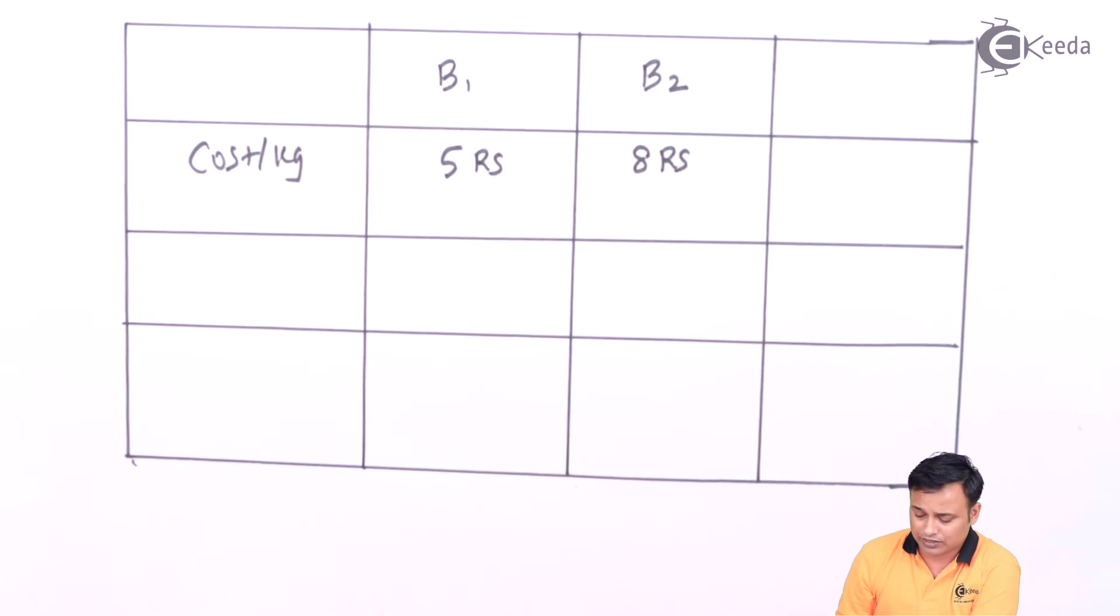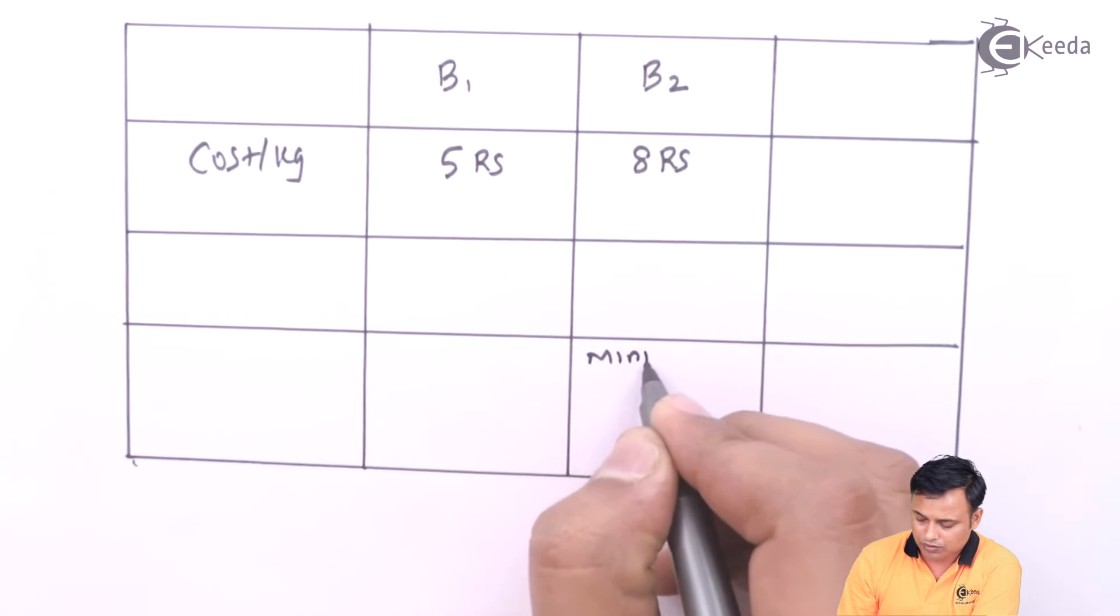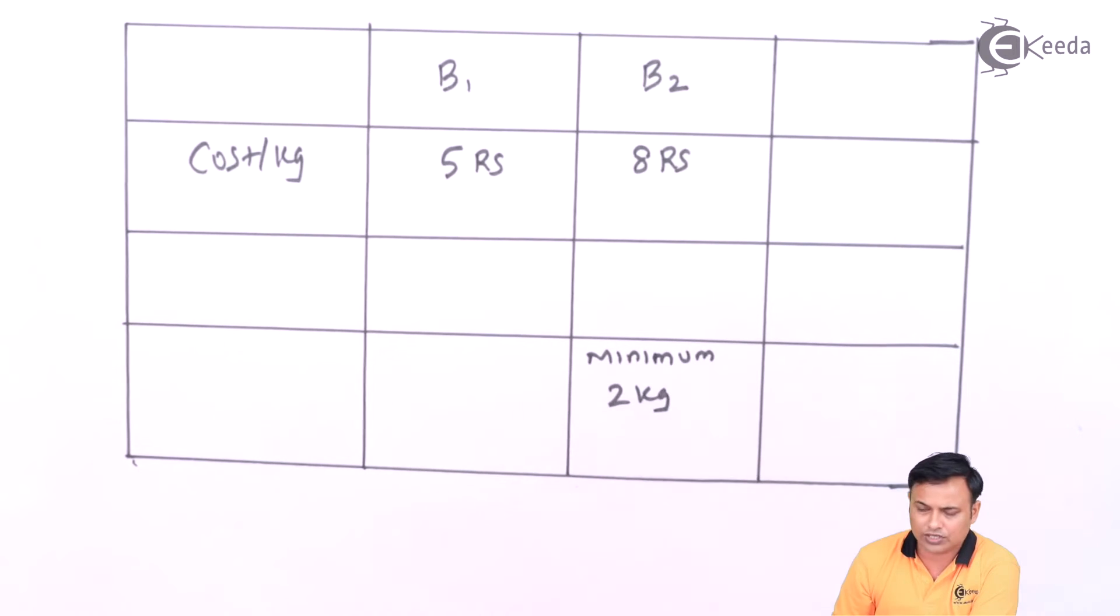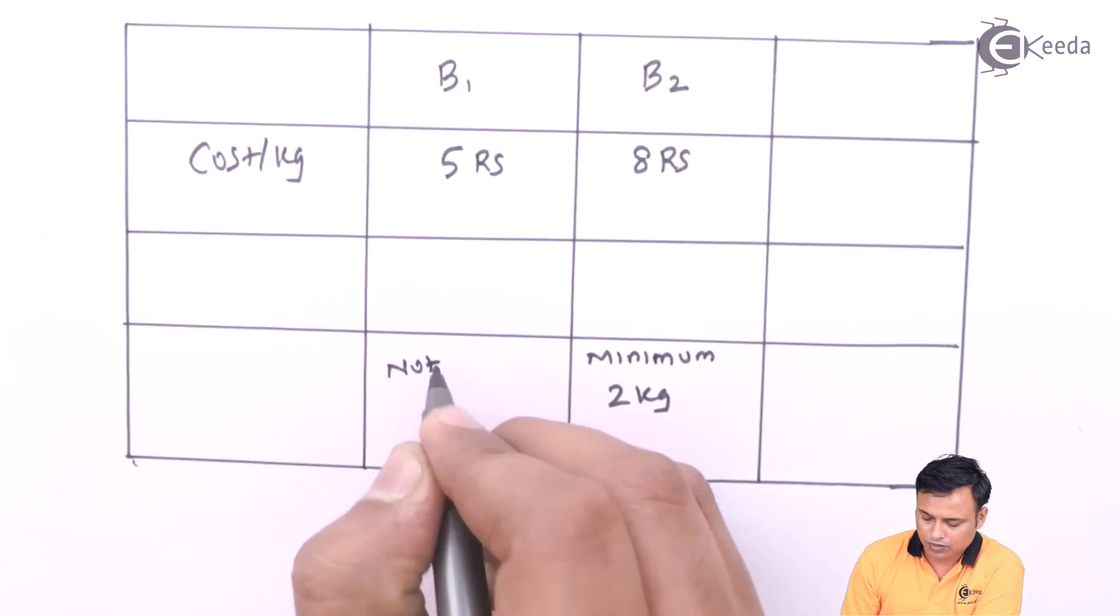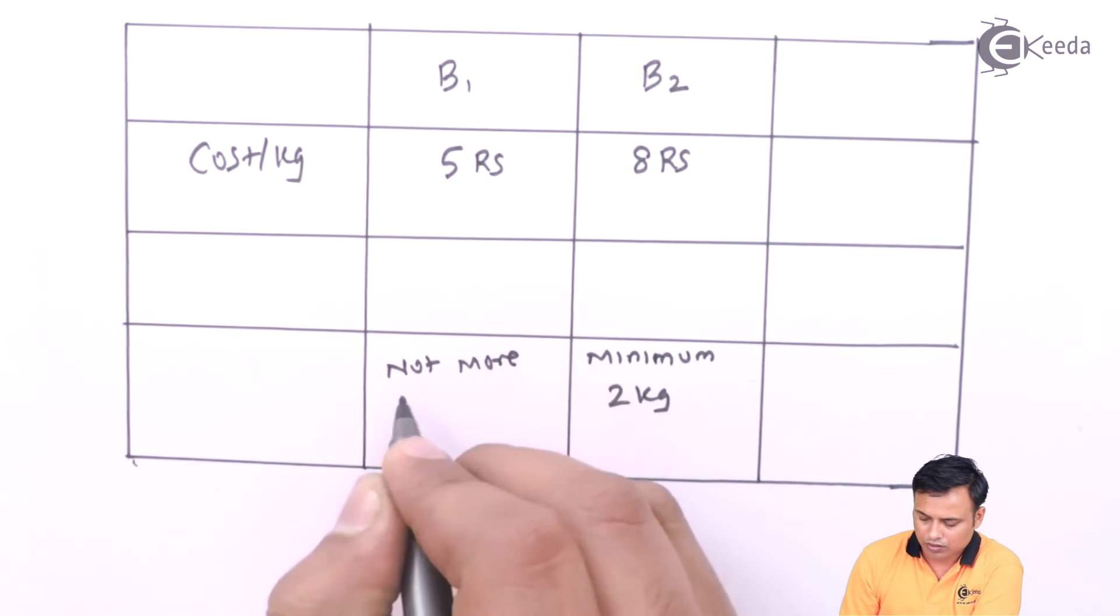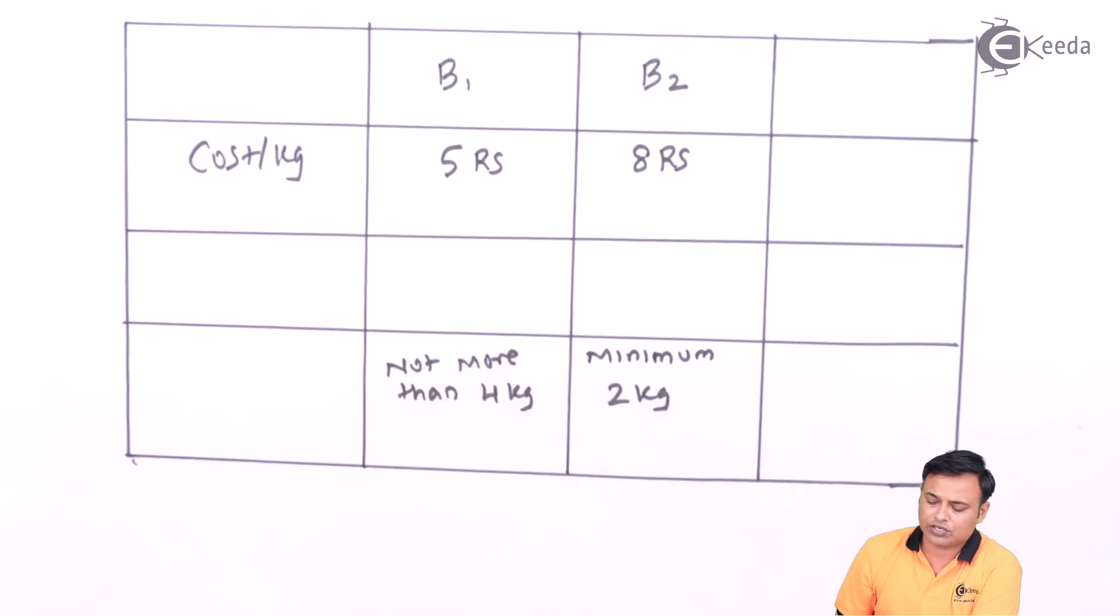There is a condition that there should be minimum 2 kg of B2 and not more than 4 kg of B1.